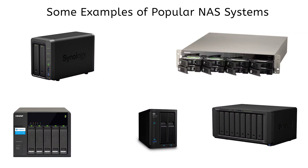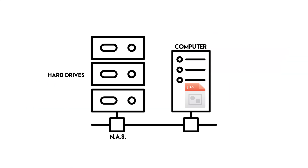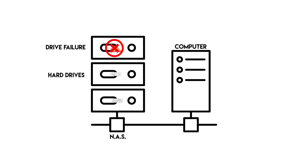Another popular method of redundancy is a NAS, or what's known as a network attached storage. A NAS is a pricier option but can come with some extra features, such as automatic backups, remote access, and increased redundancy. If a hard drive failure were to occur in your NAS, with most systems you can pop out the old drive and put a new one back in and it will automatically rebuild the volume.